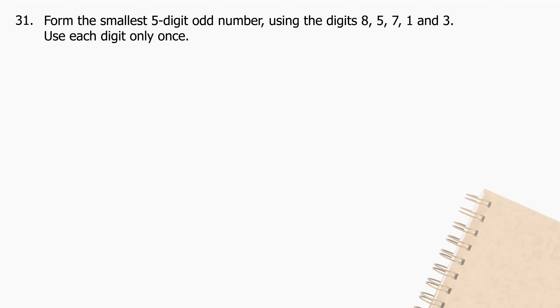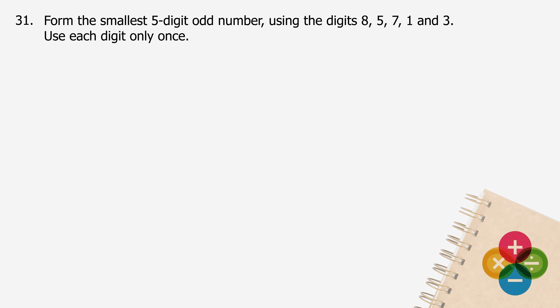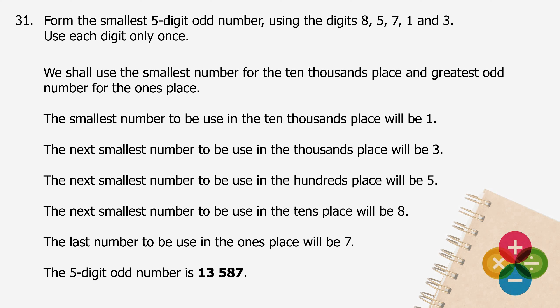Question 31: Form the smallest 5-digit odd number using the digits 8, 5, 7, 1, and 3, using each digit only once. Use the smallest number for the ten-thousands place and arrange remaining digits in ascending order, with the greatest odd digit at the ones place. The smallest number for ten-thousands is 1, ones place is 3, hundreds is 5, tens is 8, and the remaining digit 7 goes to the ones... resulting in the five-digit odd number 13,587.